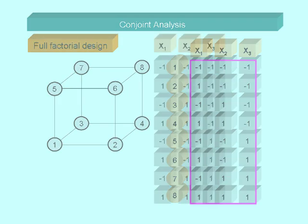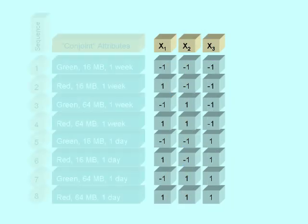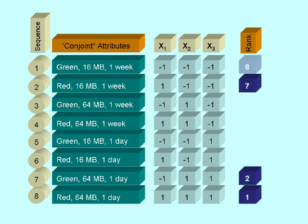The next step in a conjoint analysis is to ask a person for a ranking of the possible combinations. For example, to give a 1 for the most preferred combination going down to 8 for the least preferred combination.